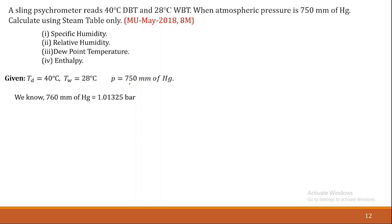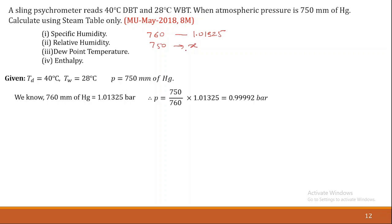We know that 760 mm of mercury is equal to 1.01325 bar. So for 750 mm of mercury, P equals 750 divided by 760 into 1.01325, which gives atmospheric pressure as 0.99992 bar.